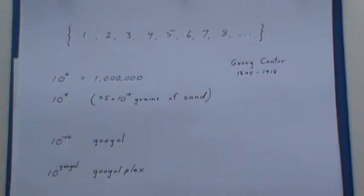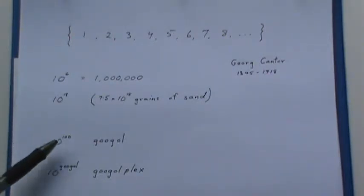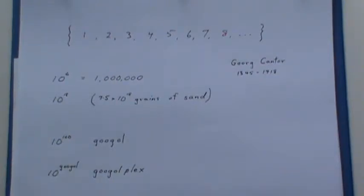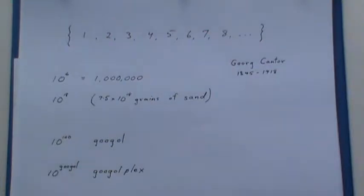To get to 10 to the 19th, you'd have 10 of those lines of sand. So to get to 10 to the 100, which is what we call a Googol, is a long, long way even from there. We also have another number in mathematics called a Googolplex, which is 10 raised to the Googol. If you think the Googol is a long way away, then 10 to the Googol is just — I can't even imagine how far away that is. I'm doing that just to give you an idea of how far these numbers go; it's hard for our minds to even conceive of going that far.